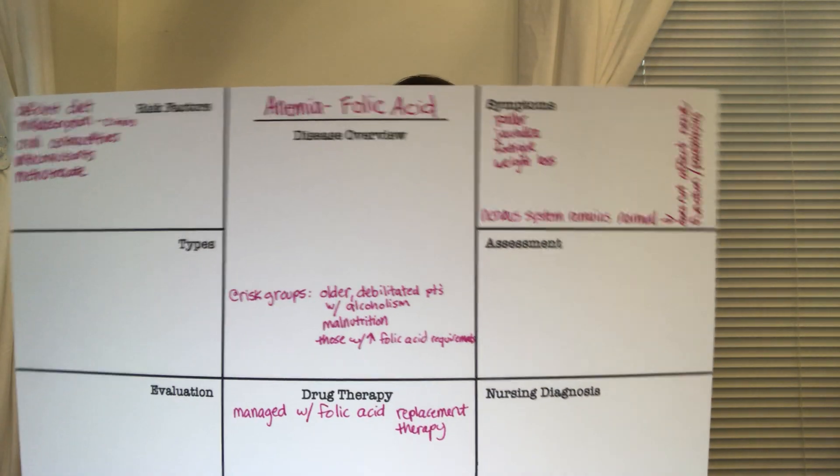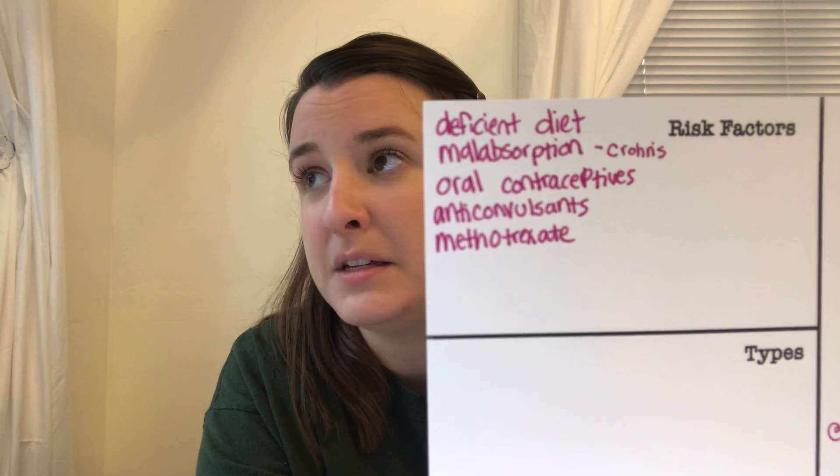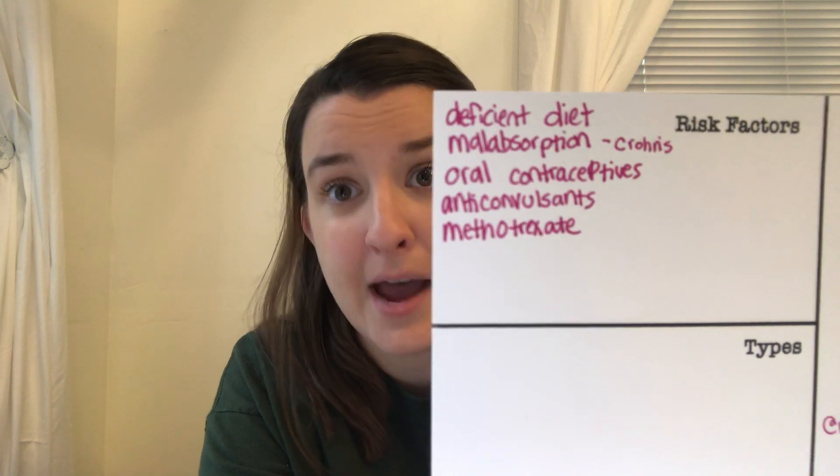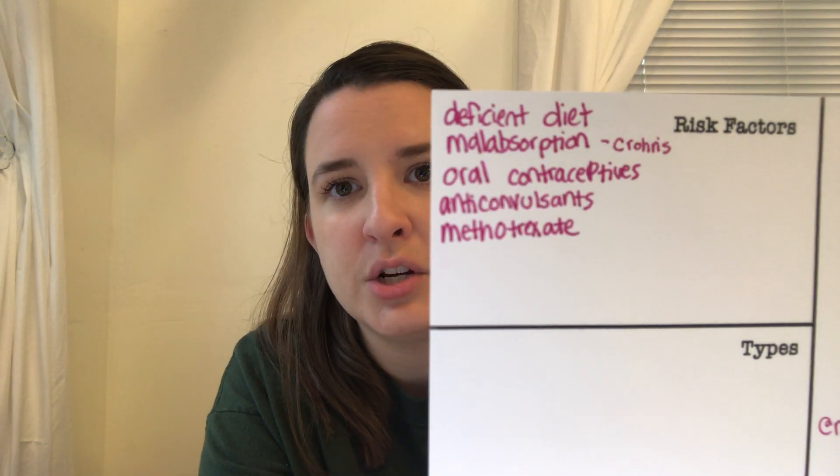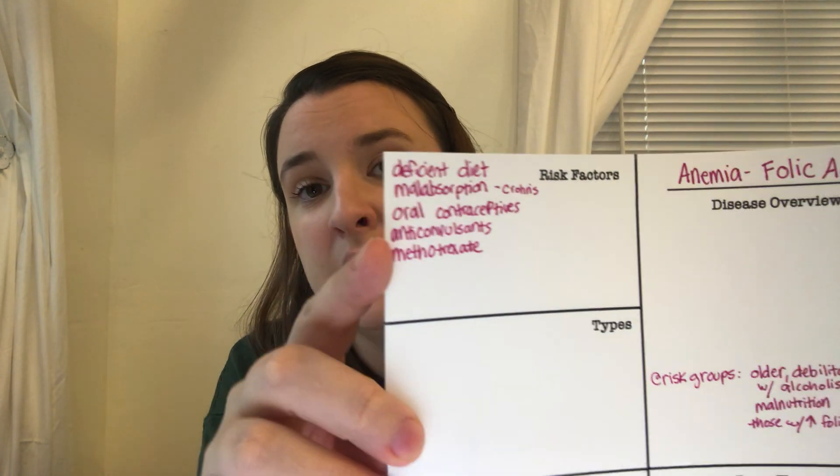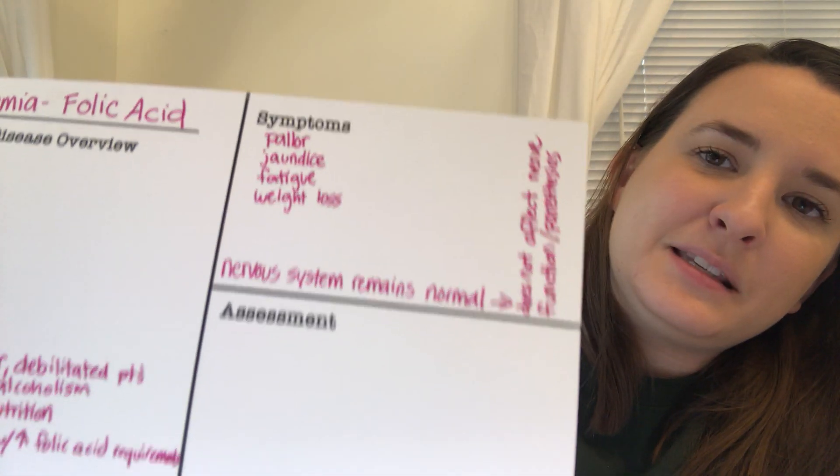Folic acid deficiency anemia is typically a deficiency of folic acid in the diet. Causes include a deficient diet, malabsorption (like Crohn's disease or loss of the small intestine), or medications such as oral contraceptives, anticonvulsants, and methotrexate, which can interfere with folic acid absorption. Symptoms include pallor, jaundice, fatigue, and weight loss — but importantly, the nervous system remains normal, because folic acid does not affect nerve function.